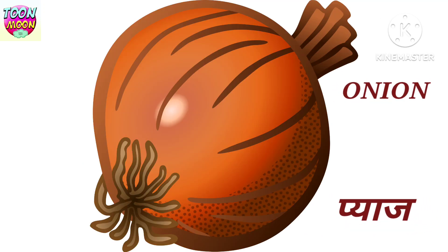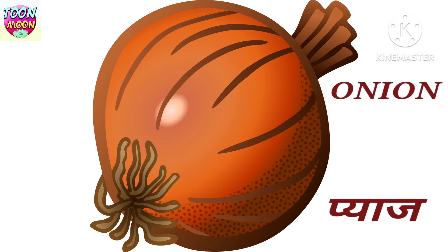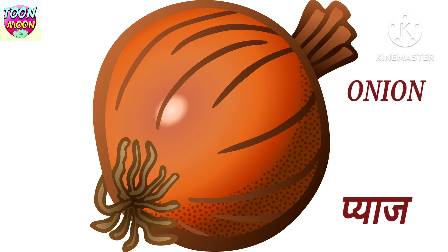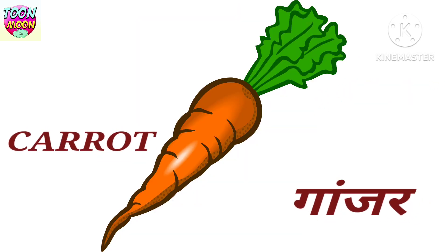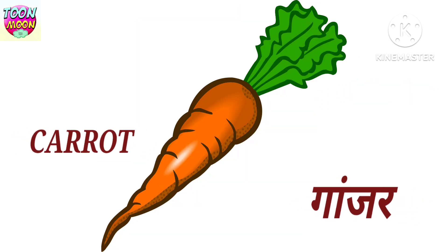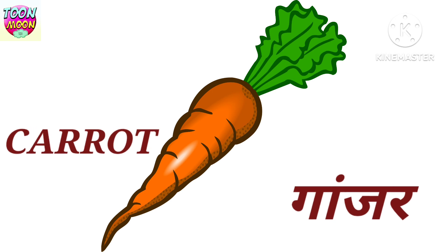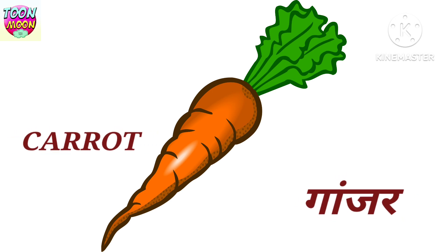Onion. Onion means Pyaas. Carrot. Carrot means Gajar.